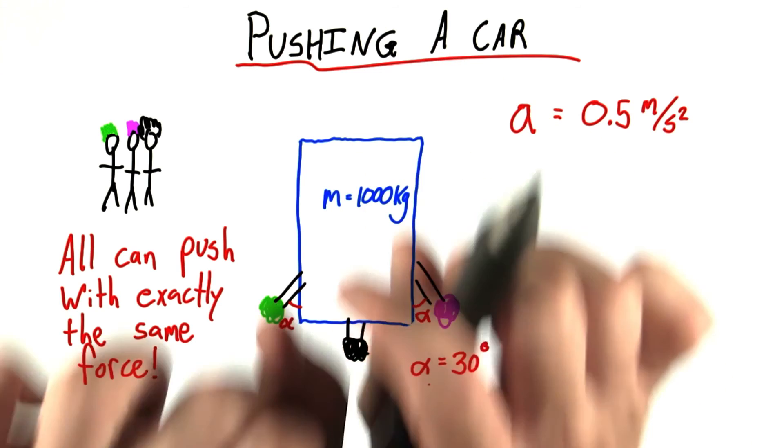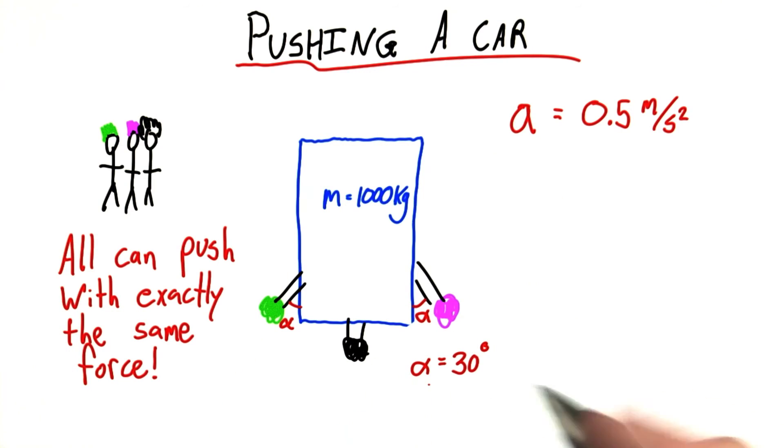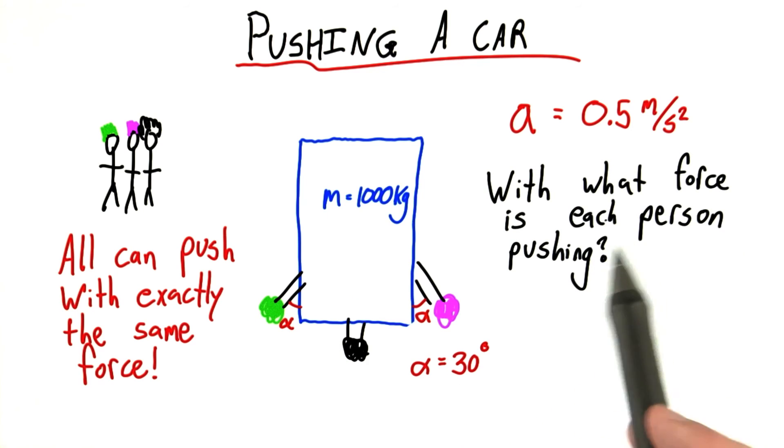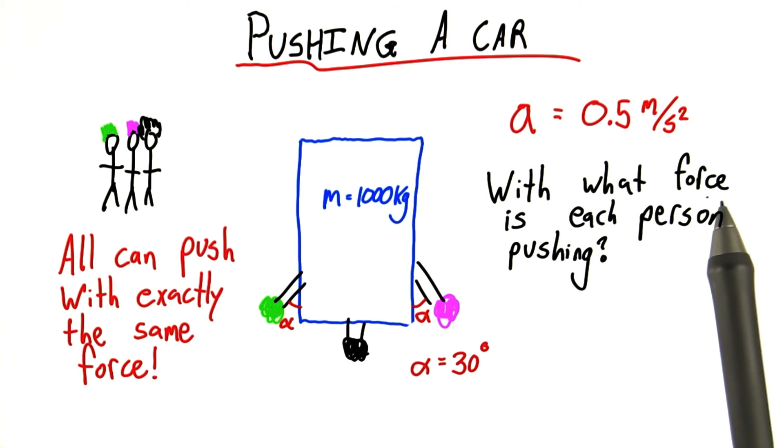Einstein here is pushing directly up on the back of the car, but these guys are doing it at a 30 degree angle. I want you to tell me, with what force is each person pushing? Enter your answer here in Newtons.